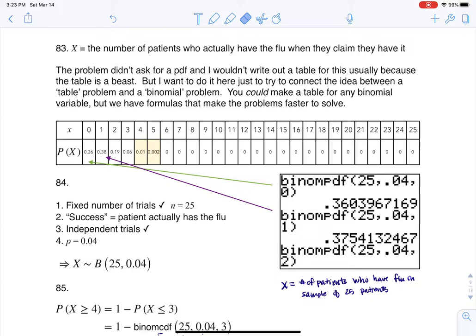We have our variable here, and I wrote it down for you: X is the number of patients who have the flu in this sample of 25 patients. I would just start to get in the habit of saying 'in sample of 25' because it might start to ground you in terms of what your fixed number of trials would be.